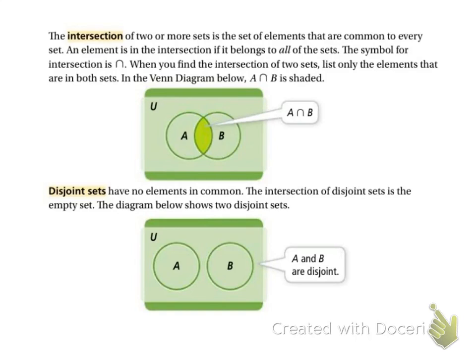Okay, so the intersection of 2 or more sets is the things that they share, that they have in common. So if I had a set A that had 1, 2, and 3, and I had a set B that has 0 and 1,